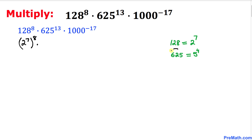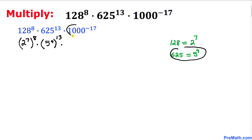Now let's focus on 625. We know that 625 can be written as 5 power 4. Let me go ahead and replace 625 by 5 power 4, and then raise it to power 13.